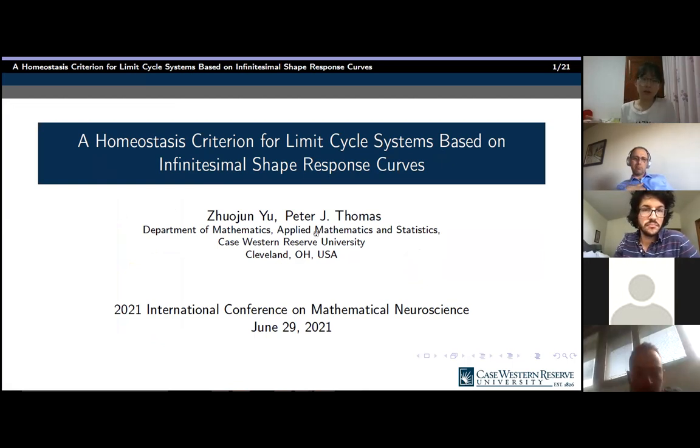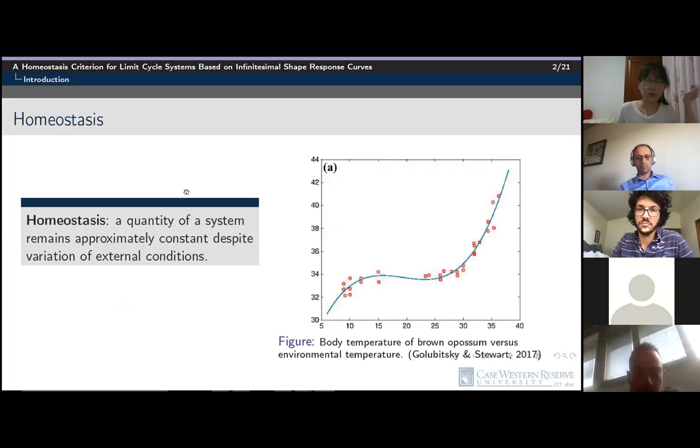Dr. Wang just explained the infinitesimal shape response curve in her talk, and here we use it as a key tool for our homeostasis analysis. So first, what is homeostasis? Many problems in motor control involve holding a quantity to remain approximately constant despite variations of external conditions.